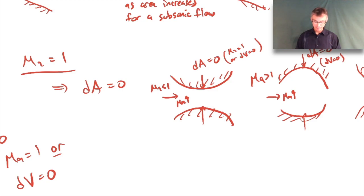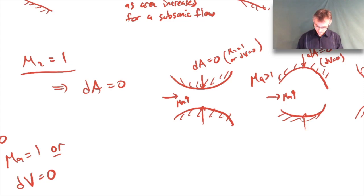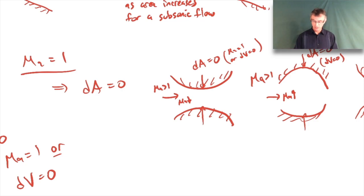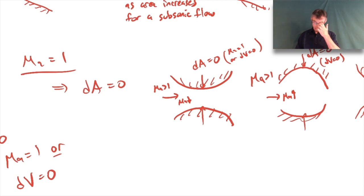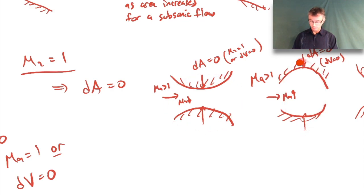But if you have M = 1 anywhere in the flow, it must occur at a minimum area. In the minimum area (converging) case, it's possible to reach M = 1, but not guaranteed. Similarly, for supersonic flow coming in and decreasing area, the Mach number goes down and we're also approaching M = 1. So this is the only kind of system where reaching M = 1 is even possible - the minimum area geometry.